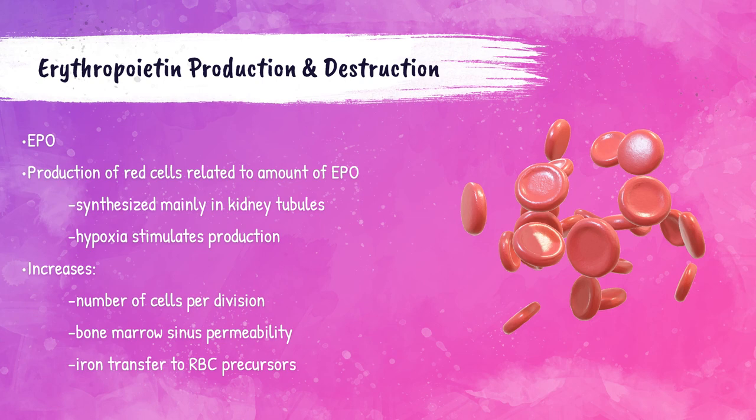There's a hormone that controls this called erythropoietin, shortened as EPO. Erythropoietin is produced mainly by the kidney. In response to hypoxia — falling levels of oxygen within the body — the kidney secretes EPO, which in turn tells the body to increase the amount of red blood cells it produces. So the production of red blood cells is directly related to the amount of EPO being secreted by the kidneys.